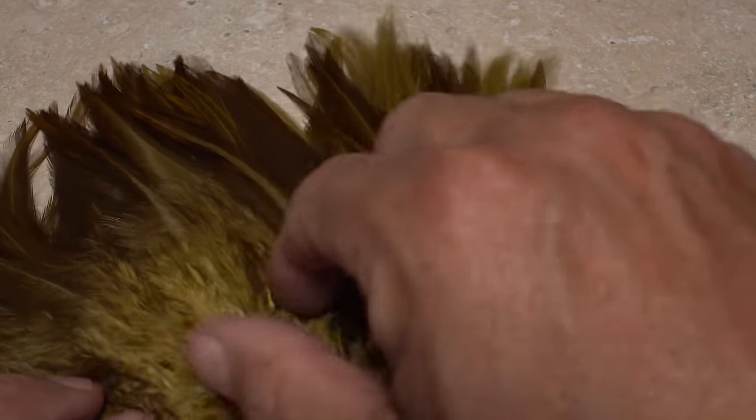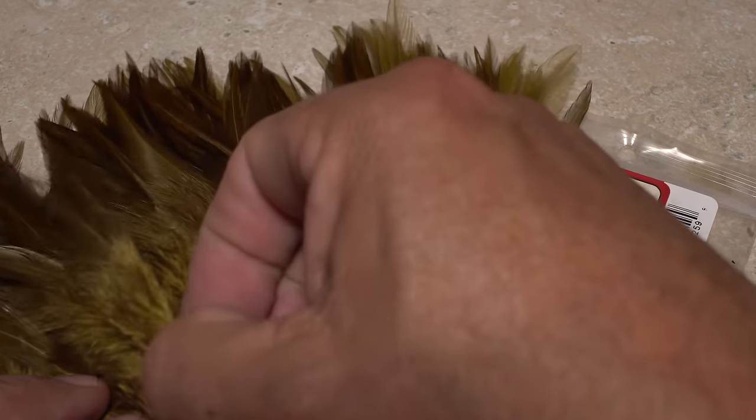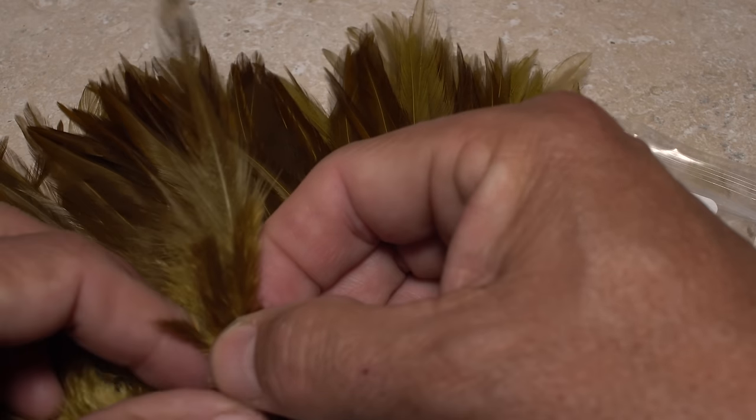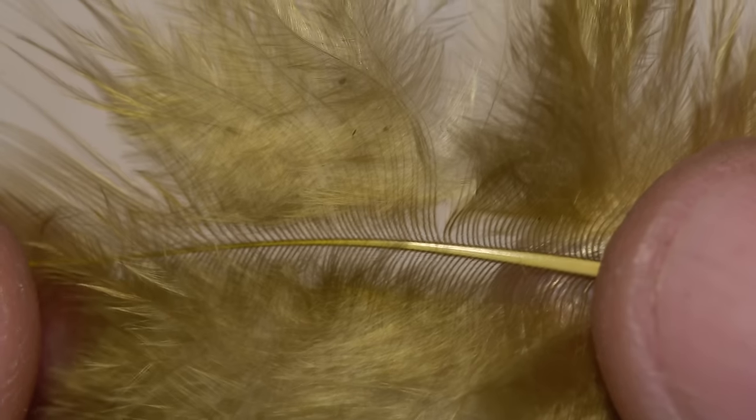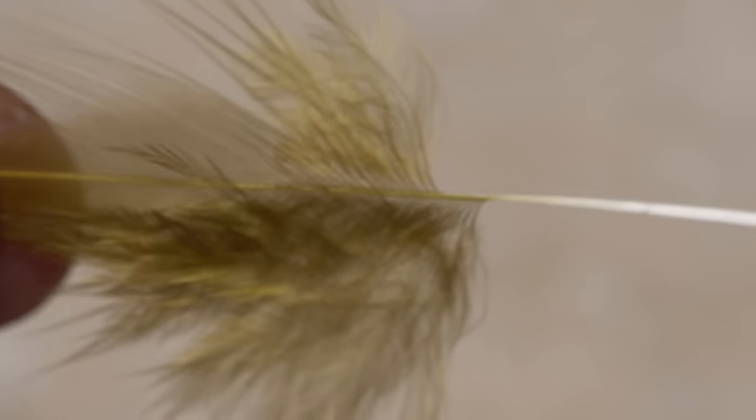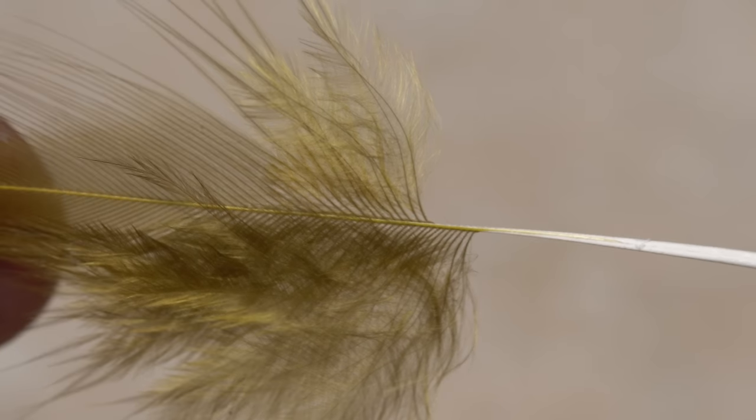For hackle, I'm going to use a single Sculpin Olive saddle hackle. Try to find one with fibers that aren't too long and with some fluffy stuff down by the base. Locate the place on the stem where it dramatically drops in size and strip the fuzzy fibers off below that point. You should be left with just a little bit of fluff before you get into straight hackle fibers. Leaving the fluffy stuff on is optional, but I think it adds to the pattern.